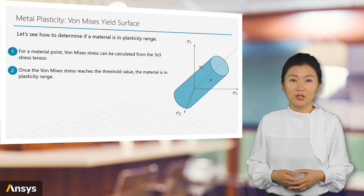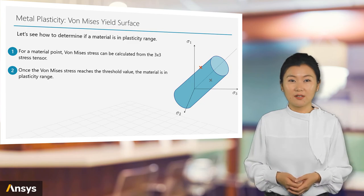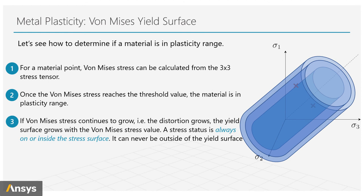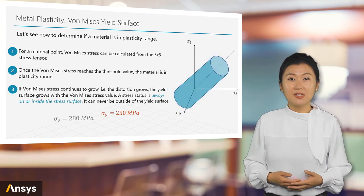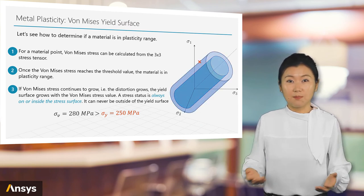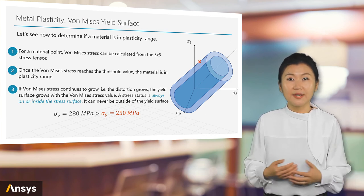A very important feature of yield surface is a stress state can never go outside of the yield surface. If Von Mises stress continues to grow after arriving at the initial yield surface, the yield surface will also grow with it. A stress state is always on or inside the yield surface; it can never be outside of it. For a material point, if the Von Mises stress result is 280 MPa, the yield surface will then expand to 280 MPa, and the material state will be on this expanded surface.